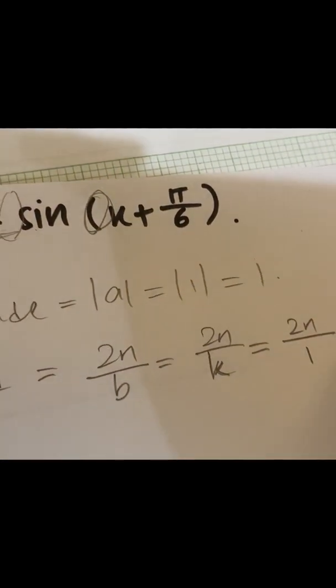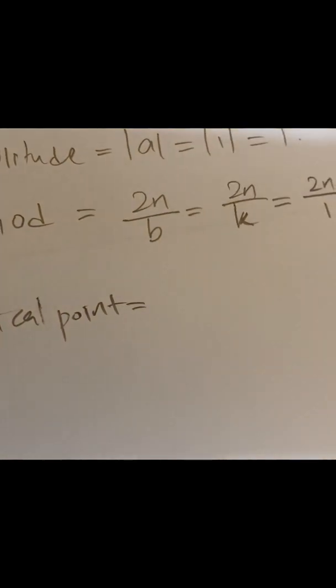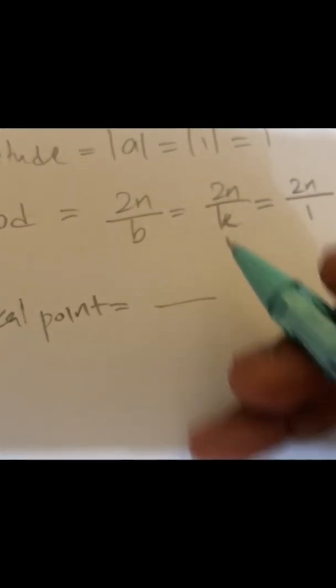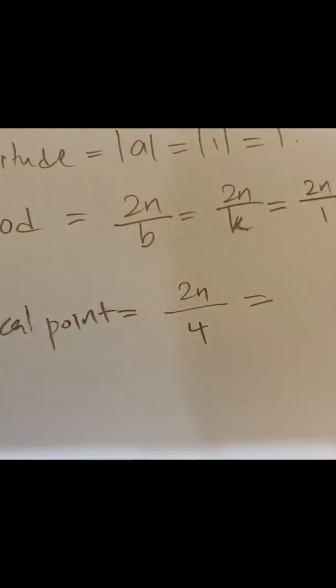is one, so 2π. Okay, there we have to find the critical point, which makes it easy to find the starting point and ending point. So you have to put your period and divide by four. Whatever period it is, just divide by 4, then you will get π over 2.